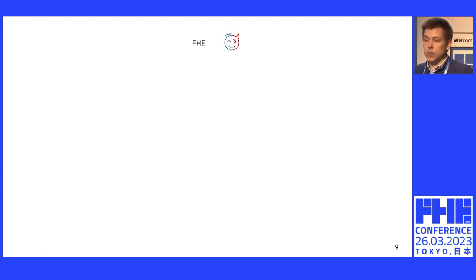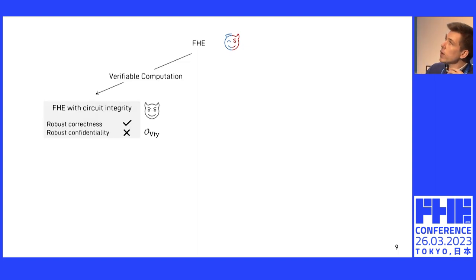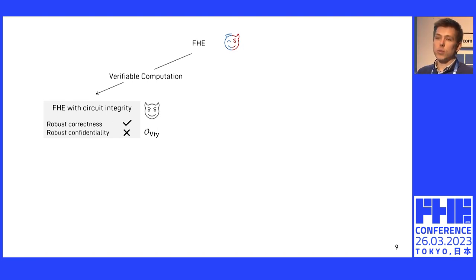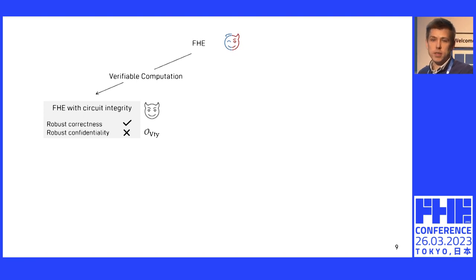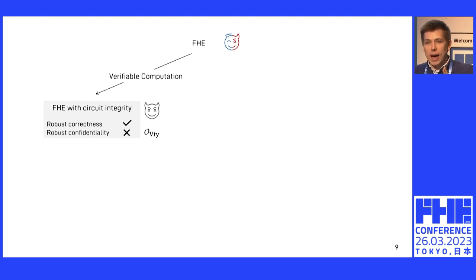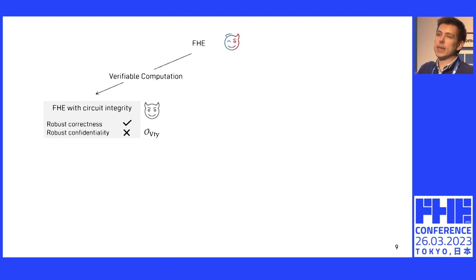What people have been trying to do in existing work is to start from an NCPA-secure-based FHE scheme. One existing line of work follows the paradigm of verifiable computation, or VC, from classical crypto, and tries to adapt this for FHE. This gives you FHE with what we call circuit integrity — basically a guarantee that the computation was executed correctly on the server. So it gives you a correctness guarantee against malicious adversary, but it doesn't really give you robust confidentiality, because the adversary is allowed to be malicious but only gets access to a verification oracle, so the confidentiality guarantees are basically equivalent to plain FHE.